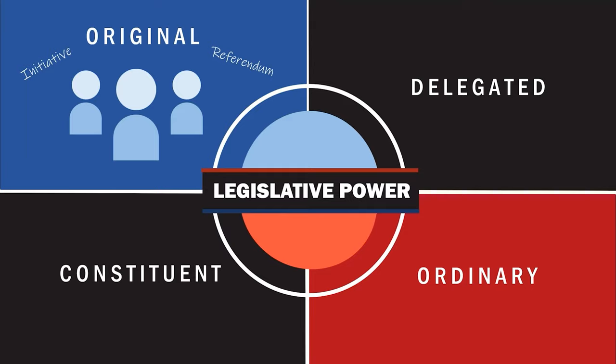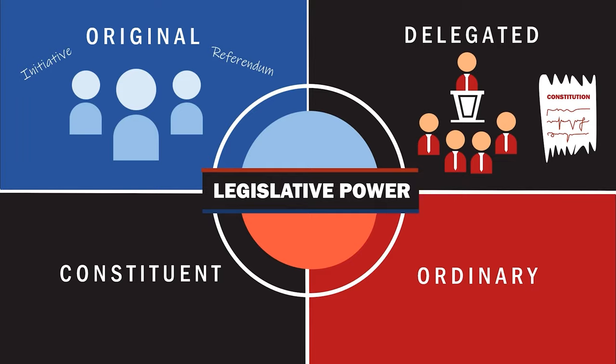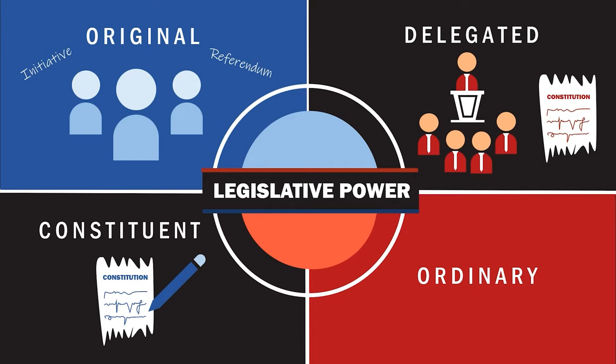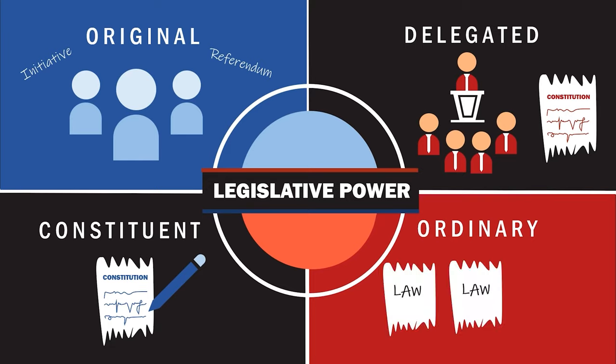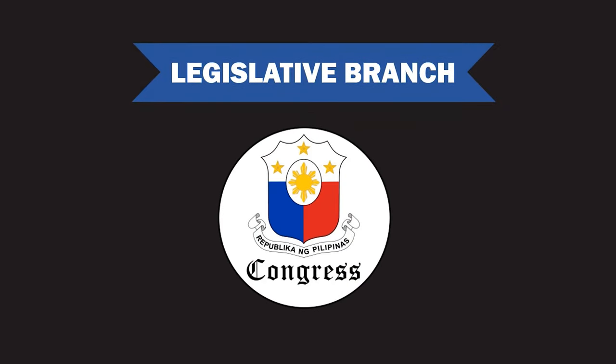Second, delegated — possessed by the Congress and bodies by virtue of the constitution. Third, constituent — the power to amend or revise the constitution. Last, ordinary — the power to pass ordinary laws. The legislative branch is vested in the Congress of the Philippines.